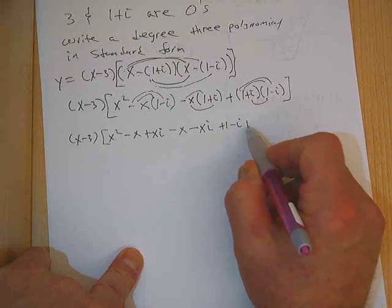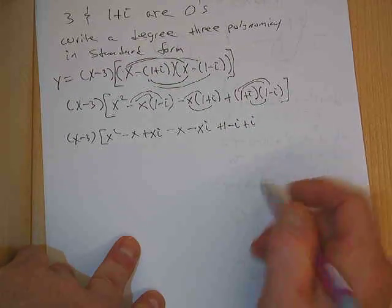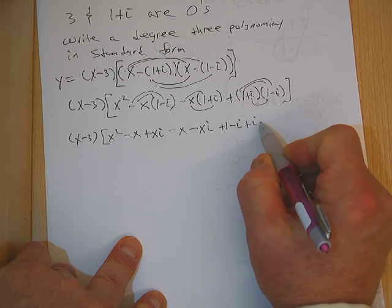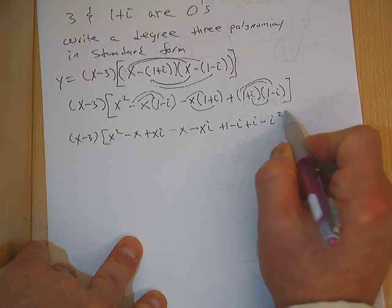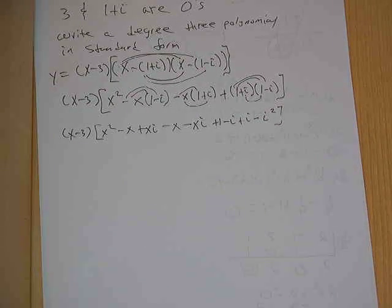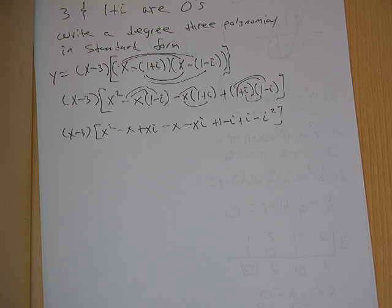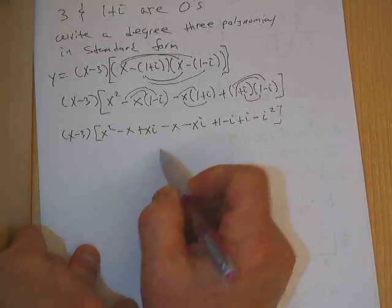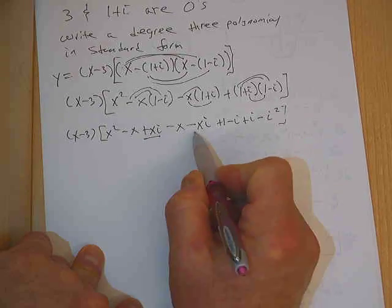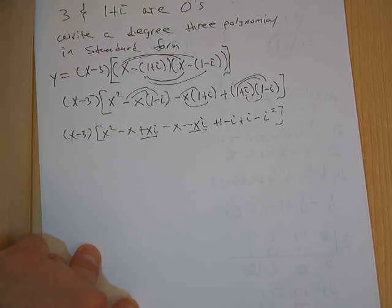1 times 1 is 1. 1 times negative i is negative i. i times 1 is positive i. i times negative i is negative i squared. Following me? Now, if we did this right, our i's will disappear. Our i's will disappear if we did this right. Let's take a look.